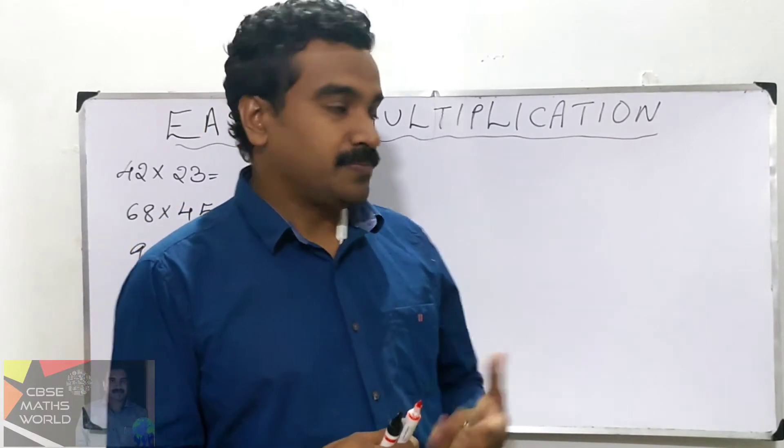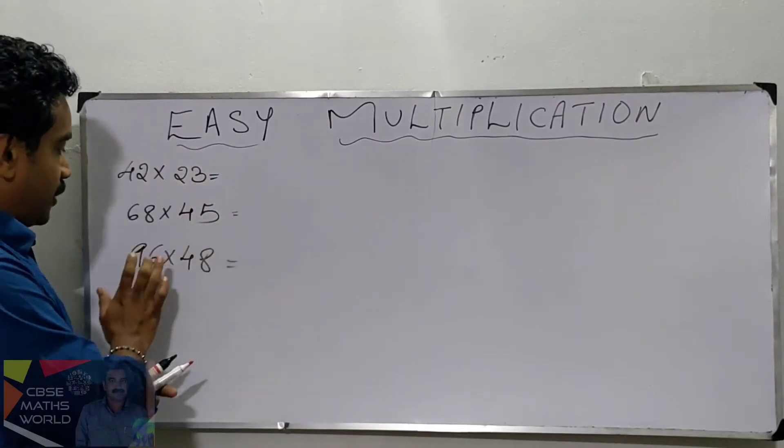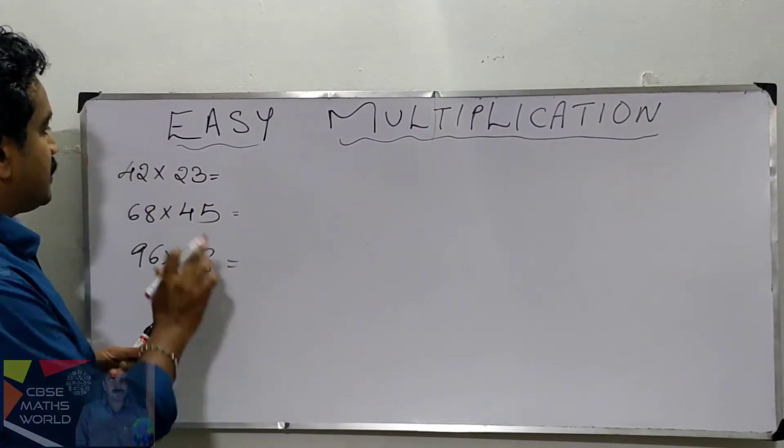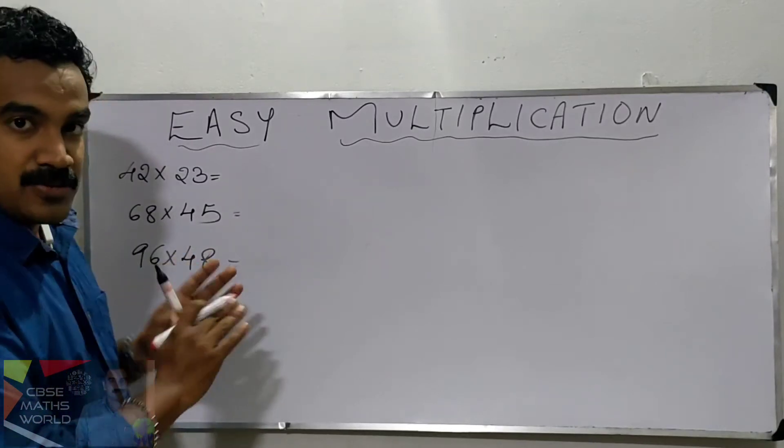Look at the first question: 42 into 23, 68 into 45, 96 into 48. What are the answers? We are not using the usual method here. We are using the Vedic technique.